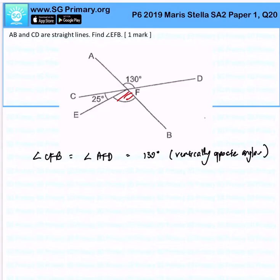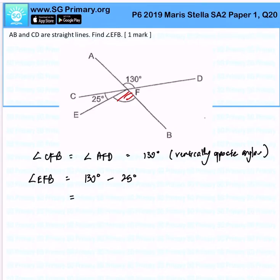This allows us to find angle EFB, because it will be the difference of 130 degrees subtract by 25 degrees, and the answer would be 105 degrees.